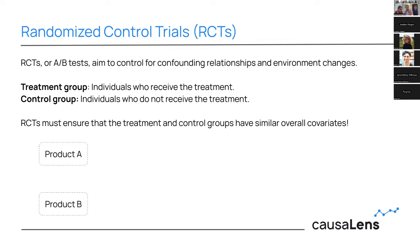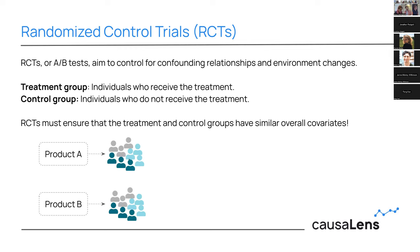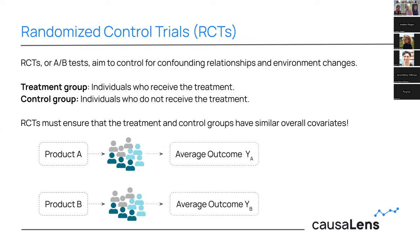As a concrete example: say we want to introduce a new product A while already running product B. We apply product A to the treatment group and product B to the control group, ensuring covariate distributions are similar across both groups. We then observe the average outcome in each group, and the causal effect is simply the difference between those two average responses. That's pretty straightforward.